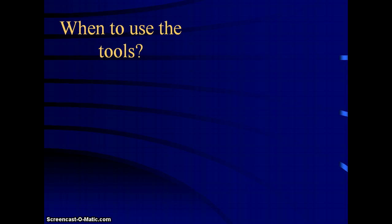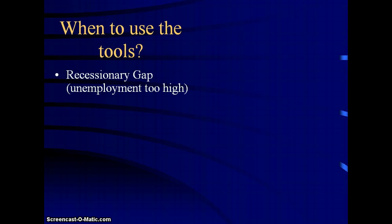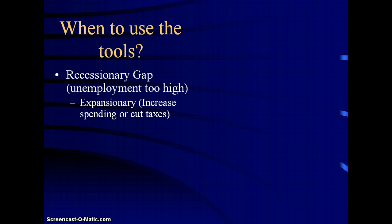So when would we use each tool? If you have a recessionary gap, meaning unemployment is too high, you want to increase AD, and to do that you want an expansionary policy. You can choose either increasing spending or cutting taxes - either one would work. Republicans prefer cutting taxes; Democrats would usually prefer increasing spending. Not always, but generally that's a good rule of thumb. For our purposes in this class, if you choose increasing spending or cutting taxes in a recession, you're going to be fine.